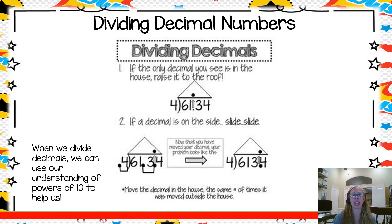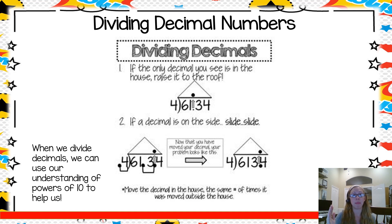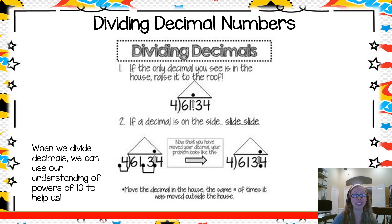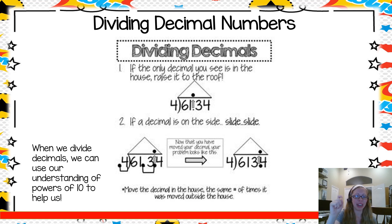The reason this works is because we've learned you can multiply any number — any decimal number or whole number — by a power of 10. So we multiply by the same power of 10 outside the house and under the house, and that allows us to have a whole number outside. When we slide, slide, we move the decimal point enough times to get a whole number outside the house.